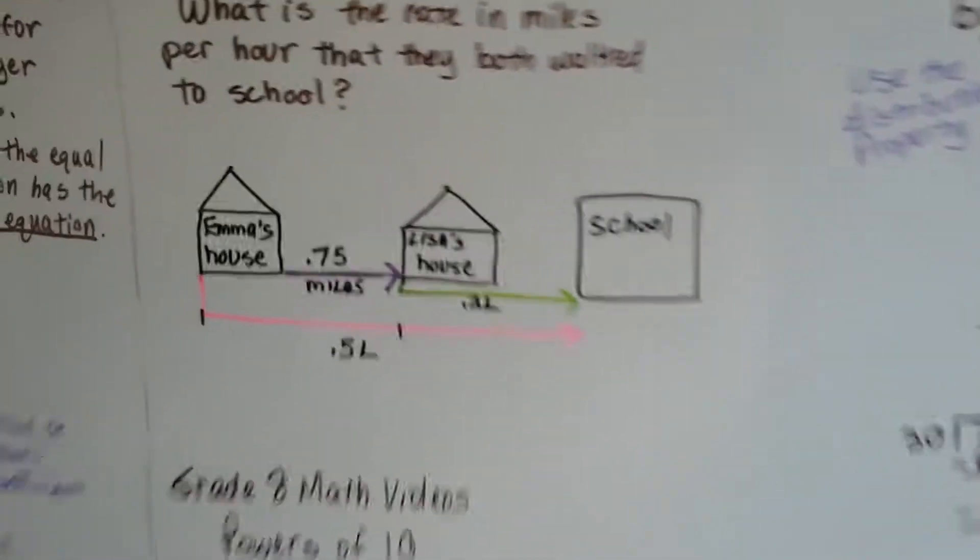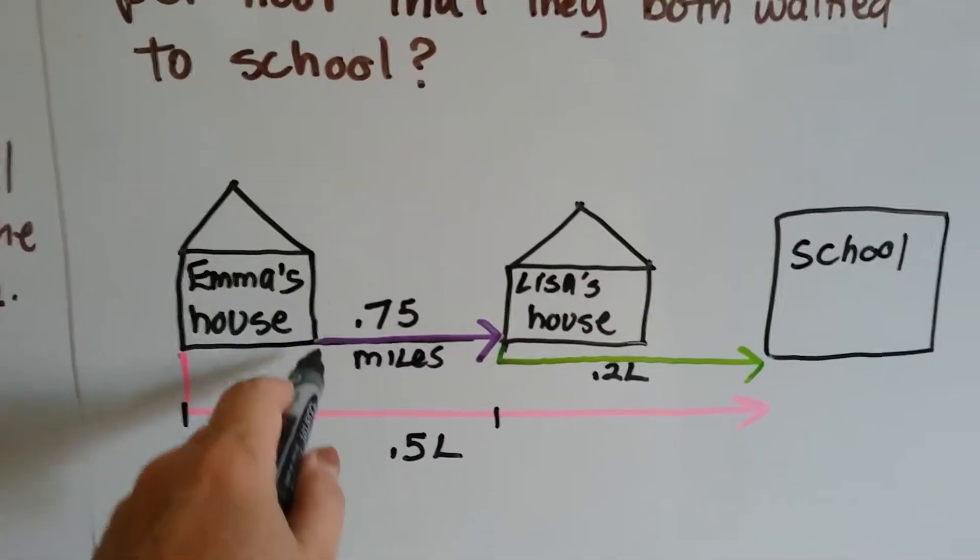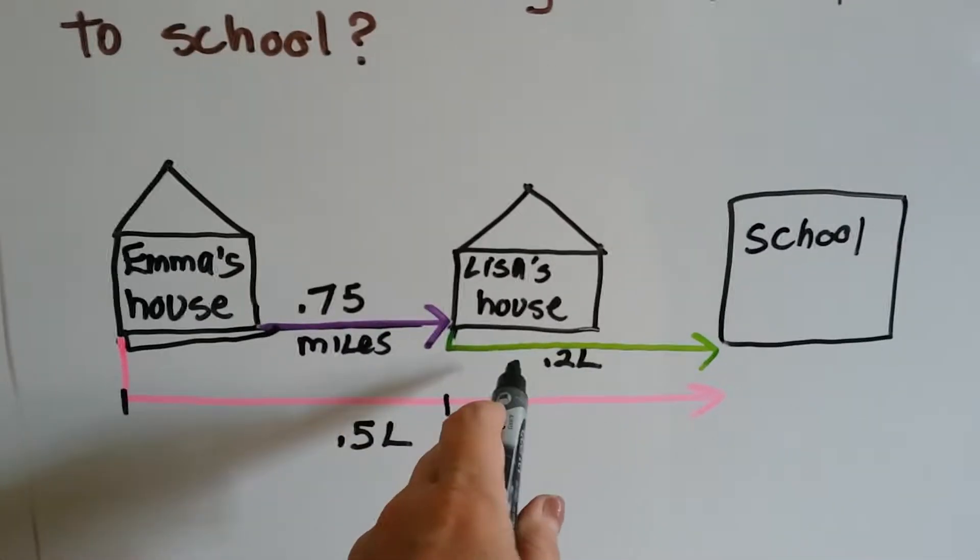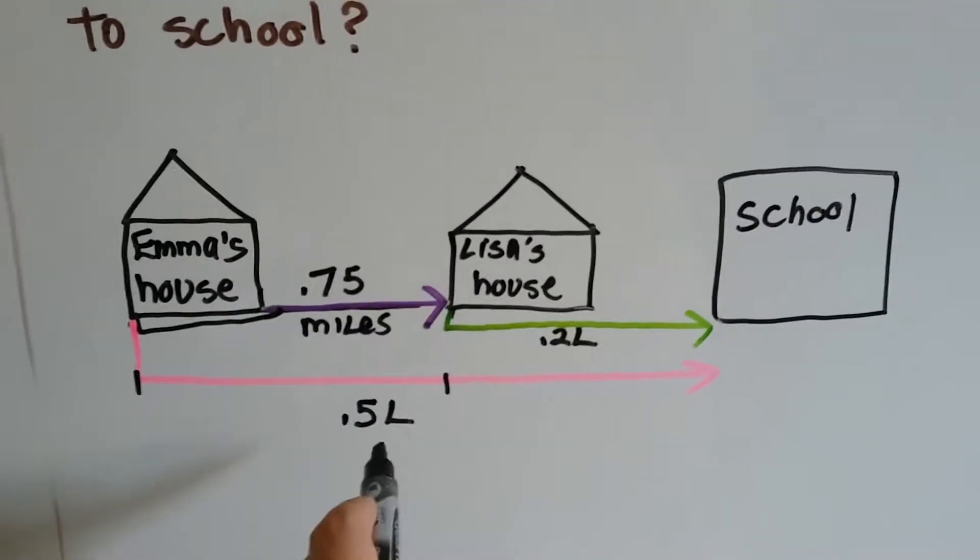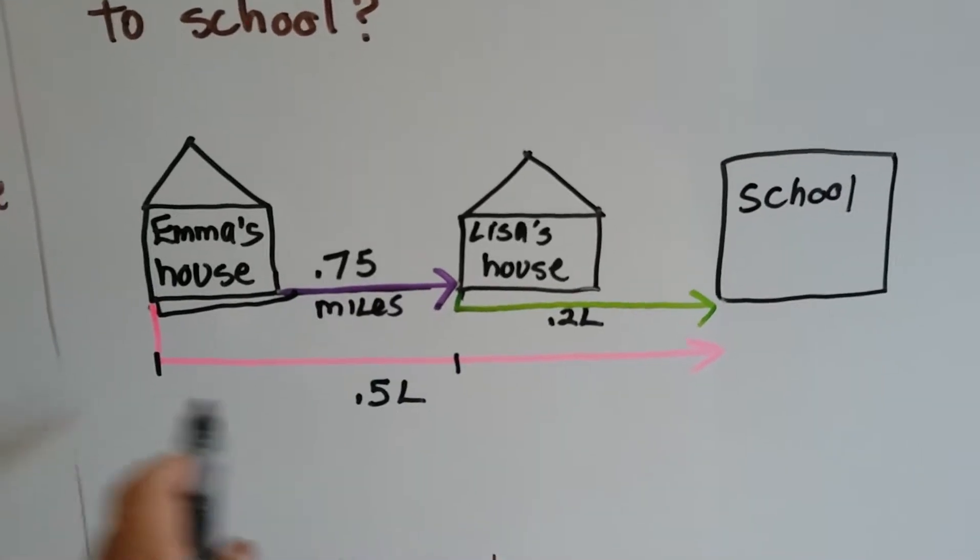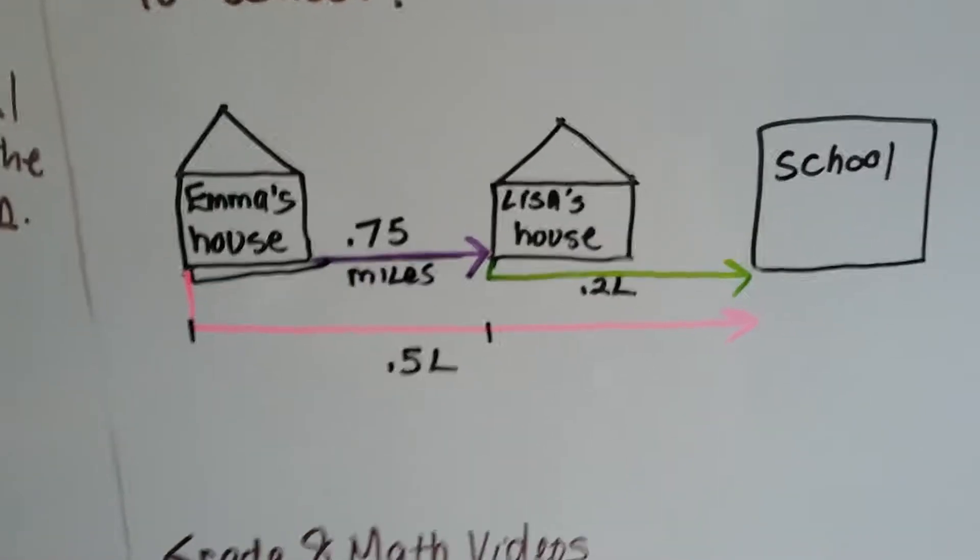And if you look, if you put the .75 together with the .2L, these are the same as the .5L, aren't they? It's the same thing. These two together are the same thing as the pink one.